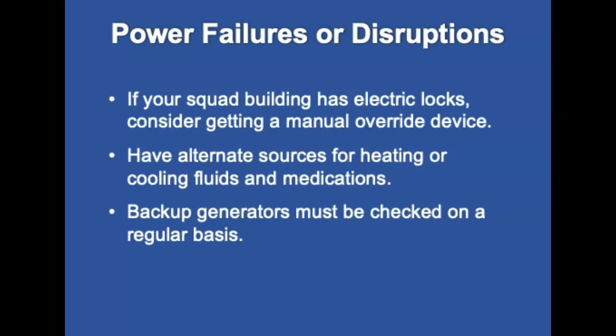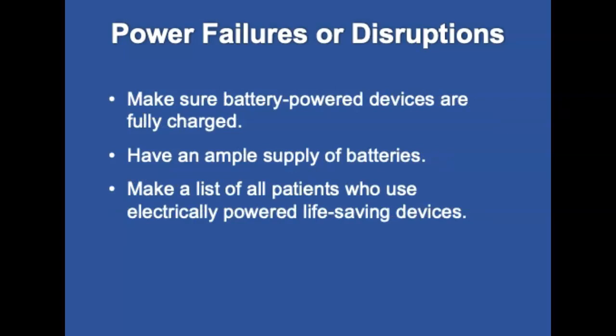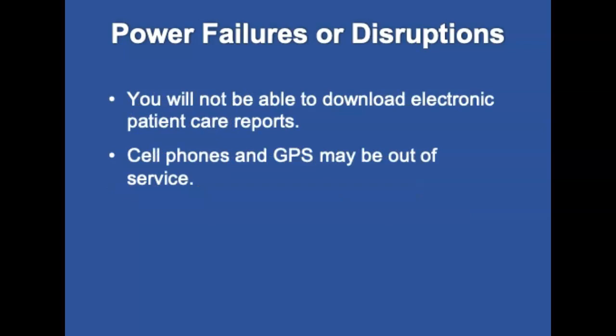For power failures and disruptions, if your squad building has electric locks, consider getting a manual override device. Have alternate sources for heating and cooling. If fluids and medications are stored in agency refrigerators or heaters, backup generators must be checked regularly. Make sure battery-powered devices are fully charged and have an ample supply of all types of batteries. Make a list of patients who use electric-powered life-saving devices. You will not be able to download electronic patient care reports, and cell phones and GPS may be out of service.